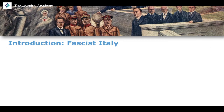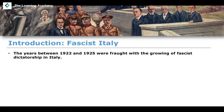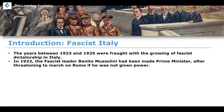One of the countries we've been talking about but not spent much time focusing on is Italy in this period. Italy was a very important country when it came to international relations into the 1930s, going up to the Second World War. Between 1922 and 1925, Italy was fraught with the growing of a fascist dictatorship. In 1922, Benito Mussolini, the fascist leader, had been made prime minister after threatening to march on Rome if he was not given power, and we see liberal Italy descend into a fascist state.